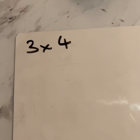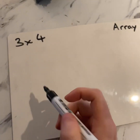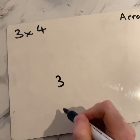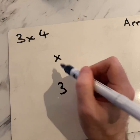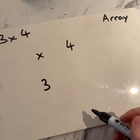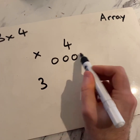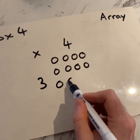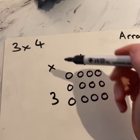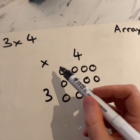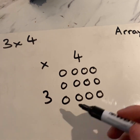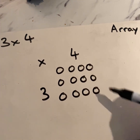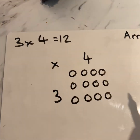Now I've got this problem: three times four means three groups of four. So I can lay it out like this — one group of four, two groups of four, three groups of four. Then to find the answer, I can count up the dots. I don't have to count them individually — I can even count in threes: three, six, nine, twelve. Three times four is twelve.